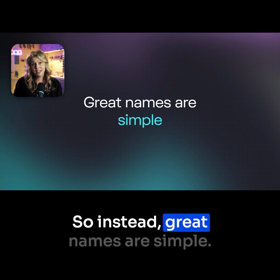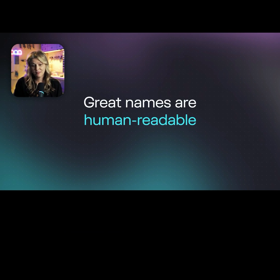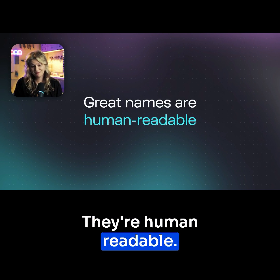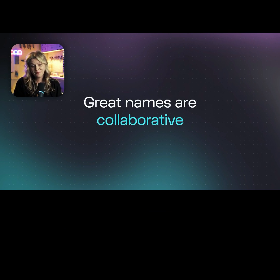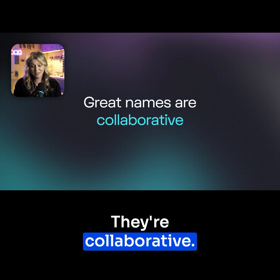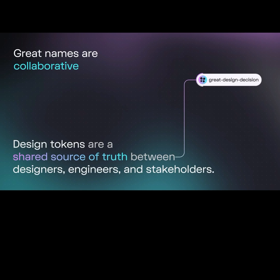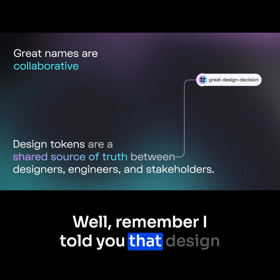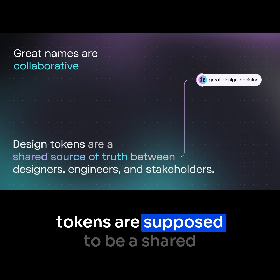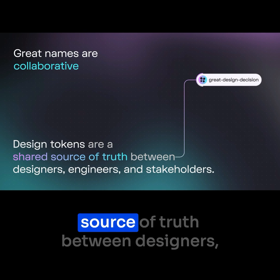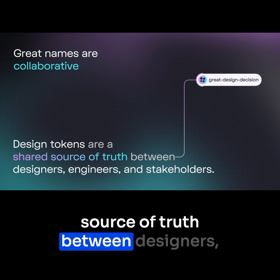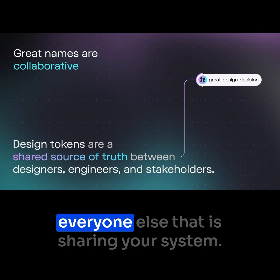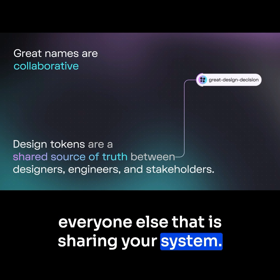So instead, great names are simple. They're human-readable. They're thoughtful. They're collaborative. And what do I mean by collaborative? Well, remember I told you that design tokens are supposed to be a shared source of truth between designers, engineers, stakeholders, and everyone else that is sharing your system?